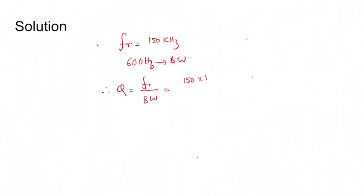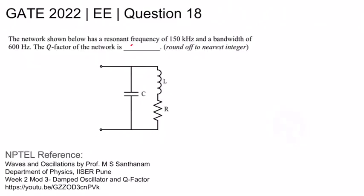That is 150 × 10³ divided by 600, which gives us 1000 by 4, which is nothing but 250. The answer is 250.